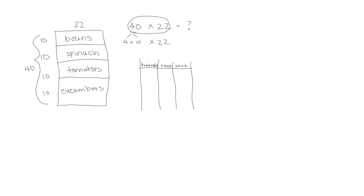We know this is also equal to 10 times 4 — we can change the order here with the commutative property — times 22. The associative property tells us we could group these two numbers together. So let's show this on our place value chart. We've done that before. So let's do 22 and we're going to do it four times.